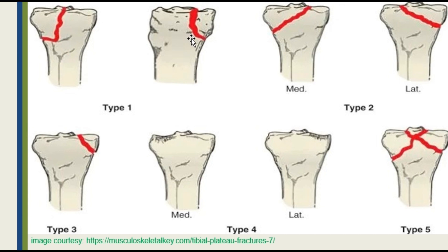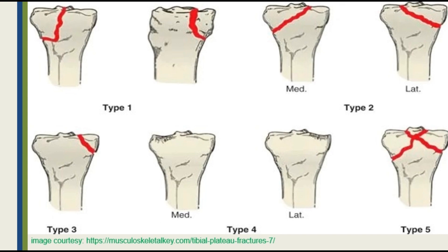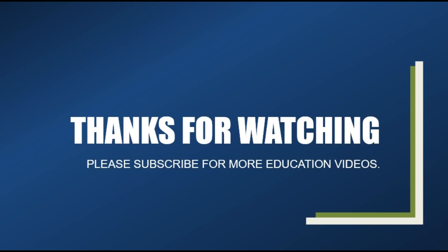To summarize Hohl and Moore: Type 1 is a coronal fracture, Type 2 is entire condylar involvement, Type 3 is lateral plateau rim avulsion, Type 4 is rim compression either on the medial or lateral side, and Type 5 is a four-part fracture. Thank you for watching.